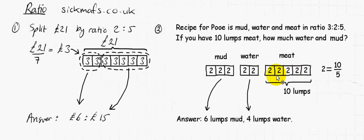So we're told the last bit, which is the 5 parts of the ratio, so therefore, 10 lumps of meat is equal to 5 parts of the ratio. Okay, so what is 1 part of the ratio? Well, you can see it visually here, but the working out is 10 divided by 5 gives you 2.